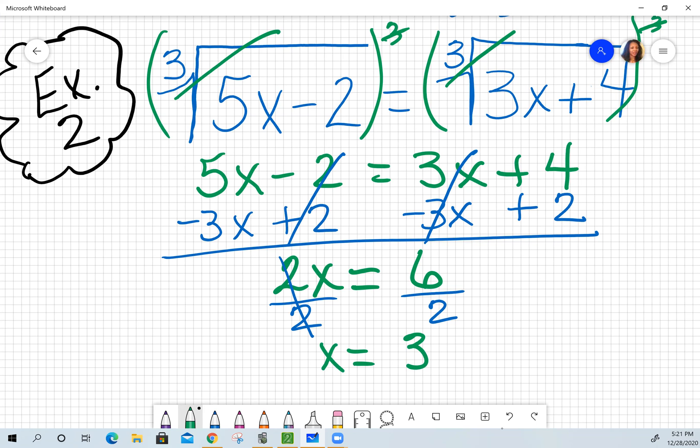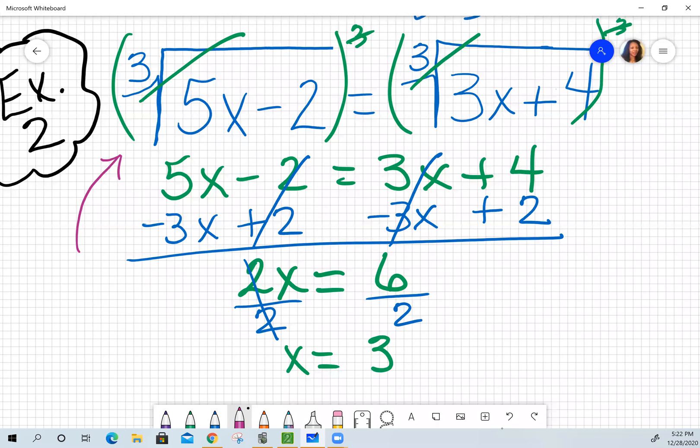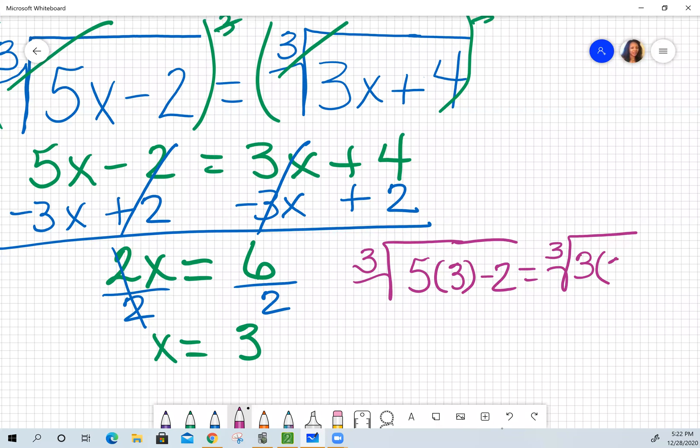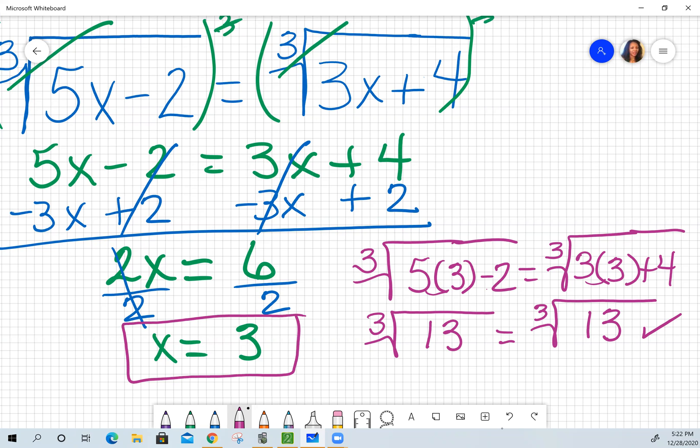Yay! I want to say I'm finished, and this is my answer. Well, I can't. What I have to do now is substitute that information in to make sure I don't have an extraneous solution. I'm going to have the cube root of 5 times instead of x, 3 minus 2. I'm going to set it equal to the cube root of 3. Again, replace that x with a 3 plus 4. When I simplify, I have to see whether or not they do actually equal each other. The cube root of 5 times 3 is 15. 15 minus 2 is 13. The cube root of 3 times 3 is 9. 9 plus 4 is also 13. Yes, this worked. Therefore, this is the correct solution, 3. That's just you double-checking for your extraneous solutions.